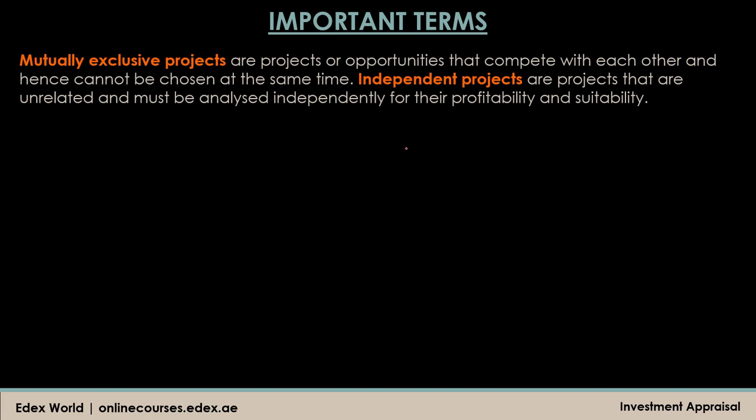Projects or opportunities can be divided into two categories. First, mutually exclusive projects — these are projects that compete with each other, where you can choose either project A or project B, but not both together, because investment in both is not feasible. Project A and project B are called independent projects when you can choose to invest in both at the same time or ignore them, because investment in one does not affect or is not affected by investment in the other.